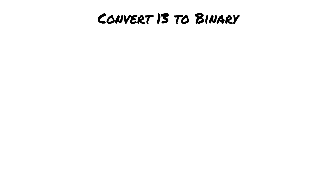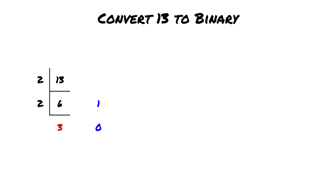Let's start easy by converting 13 into binary. We'll first divide it by 2. 13 divided by 2 is 6 with a remainder of 1. Then we'll keep dividing: 6 divided by 2 is 3 with a remainder of 0.